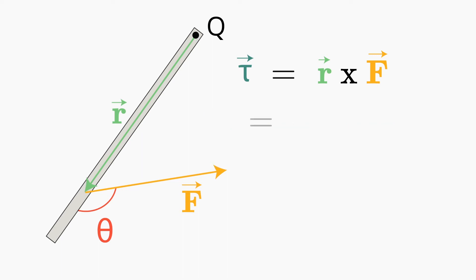We can instead group F with sine theta. So this means that we're thinking of the cross product as the distance R multiplied by F sine theta, the component of the force F that's perpendicular to the position vector R.